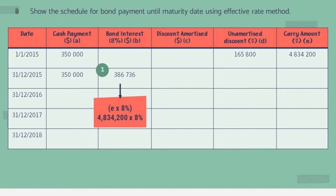For 31st December 2015, the first step is to calculate the bond interest, labeled as column B. We multiply the carrying amount (column E) by 9%, the market interest rate. The bond interest for that period equals $386,736.